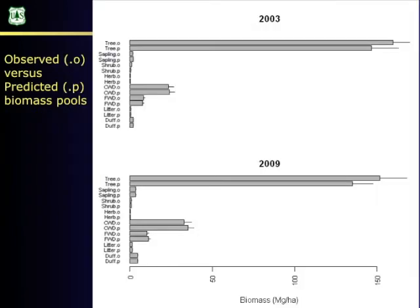This is another way to present observed versus predicted. Everything presented so far was based on predicting tree biomass. The top pair of bars in the bar charts are observed versus predicted biomass in our field plots. But we also have all these other variables measured in our field plots: saplings, shrubs, coarse woody debris, fine woody debris, litter depth, and duff depth. This starts to become relevant in fuels mapping.